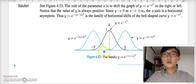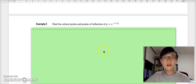Since when x approaches either positive infinity or negative infinity, y approaches but does not equal 0, we may also know that the x-axis is a horizontal asymptote. Thus, we may deduce that y = e^(-(x-a)^2) is the family of horizontal shifts of the bell-shaped curve y = e^(-x^2).